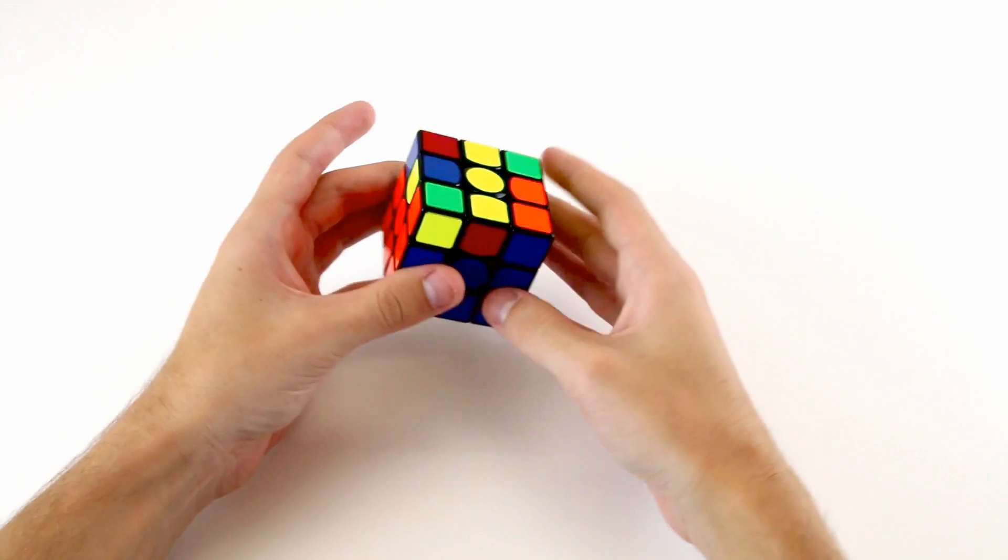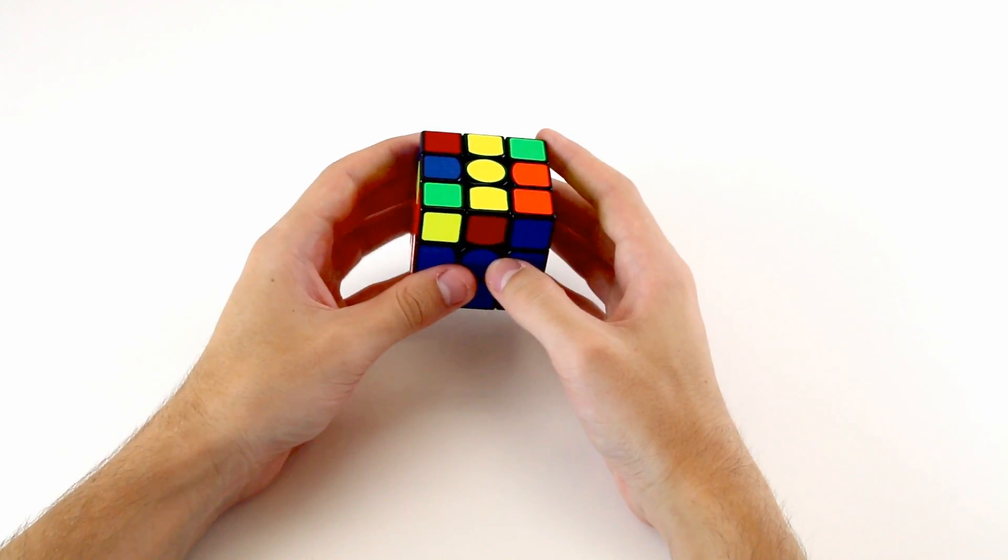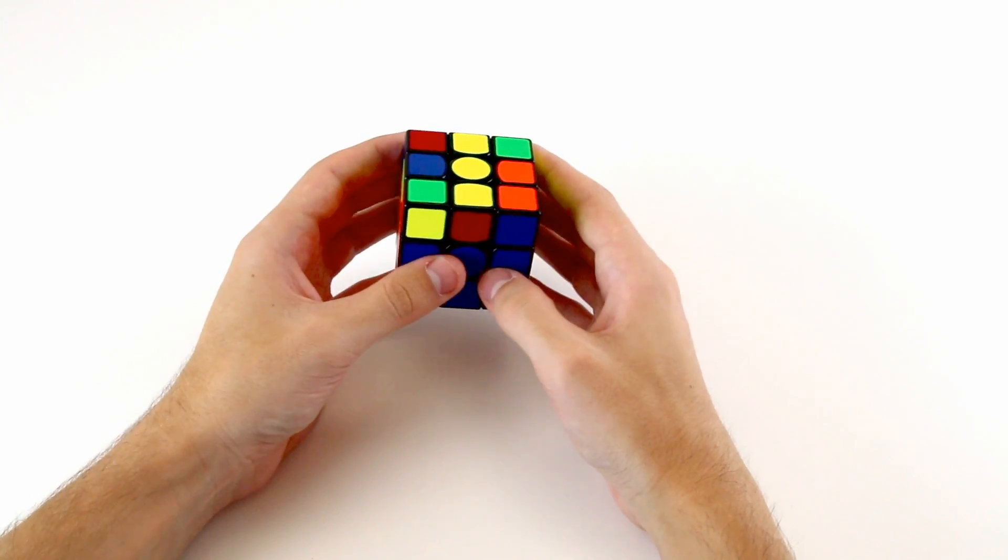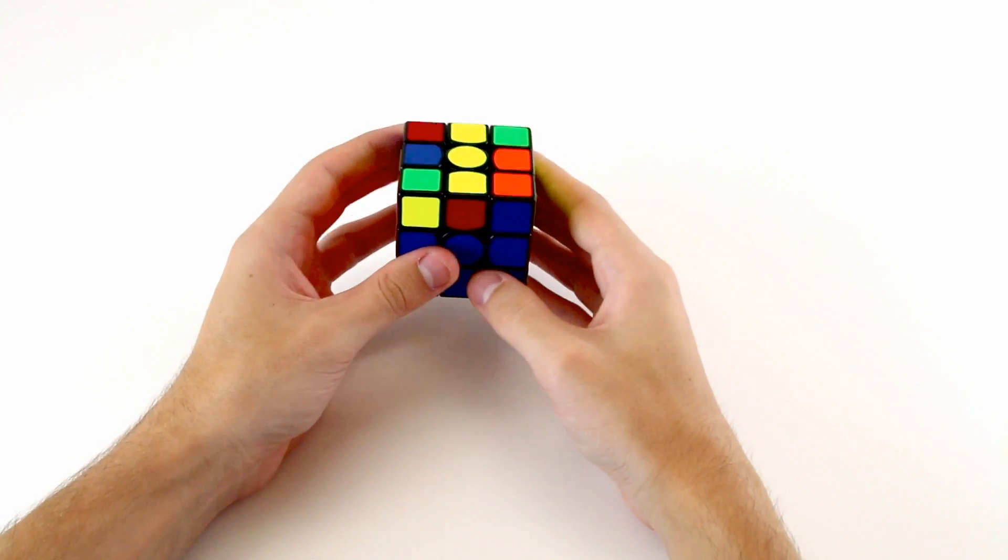For example, if I was trying to guess the PLL that would come up after I do this OLL, I would probably guess a G permutation or something like that where there aren't many blocks around the cube, just because I see that there's kind of a random dispersion of colors around the top here.